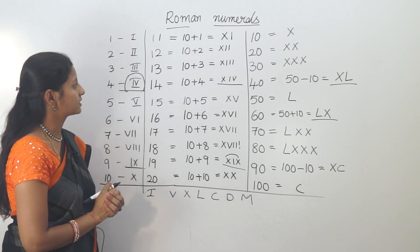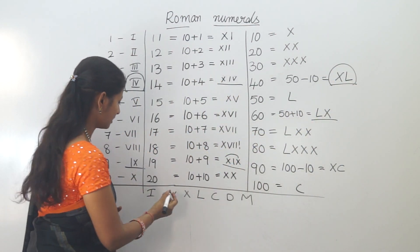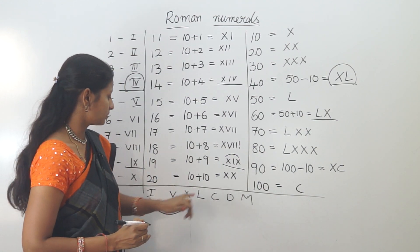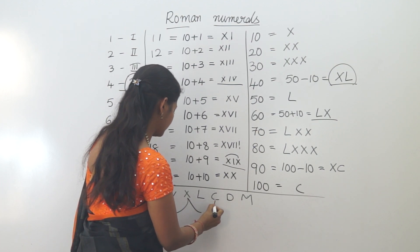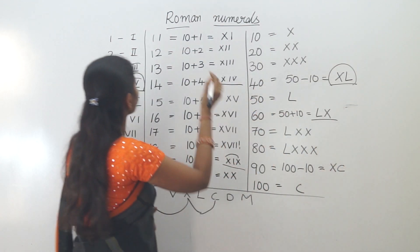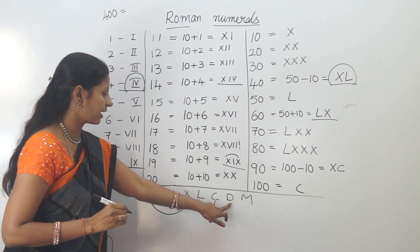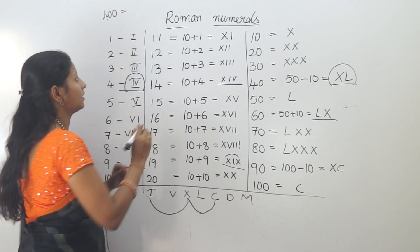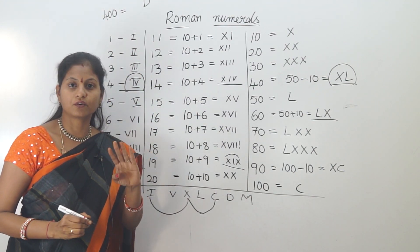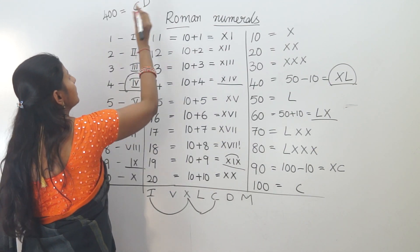For subtraction rules: I can subtract from V and X. X can subtract from L and C. C can subtract from D and M. For example, 400 is written as CD — C (100) subtracted from D (500).